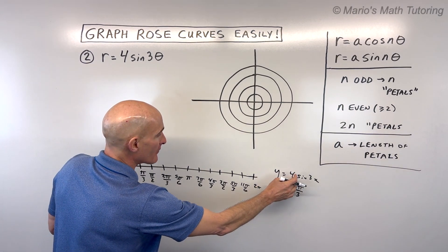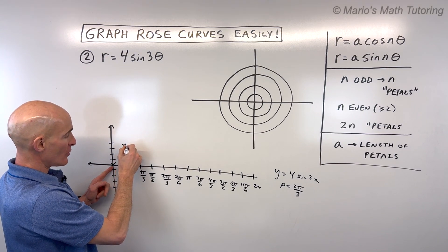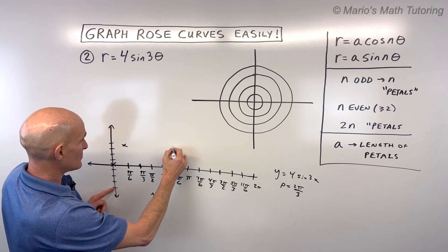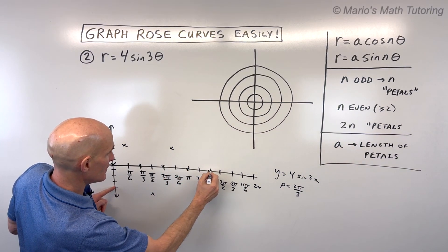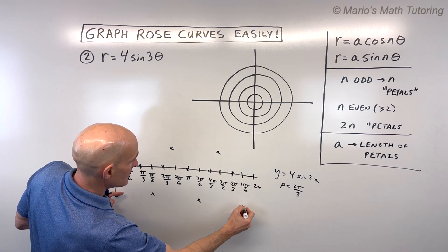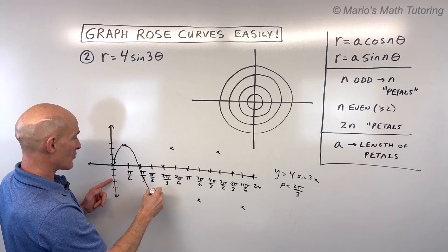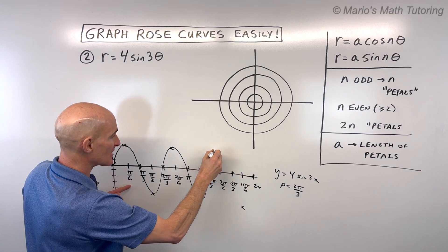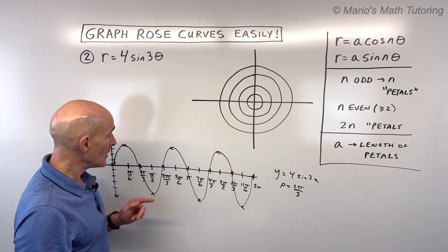With the sine graph, it starts at the midline, makes its way up to the maximum of 4, back to the midline, down to the minimum, back to the midline — repeating that pattern through three full cycles from 0 to 2π. We'll use this as a guide to graph it on our polar graph.